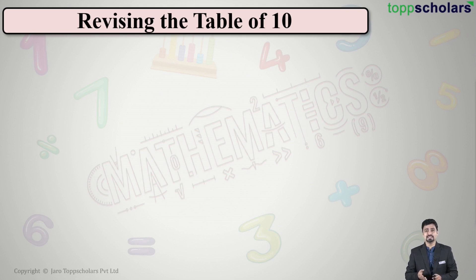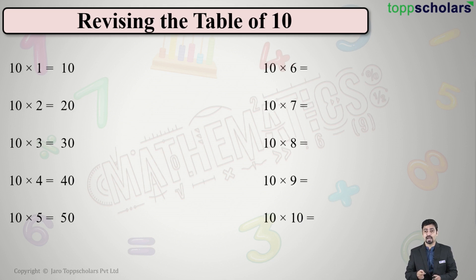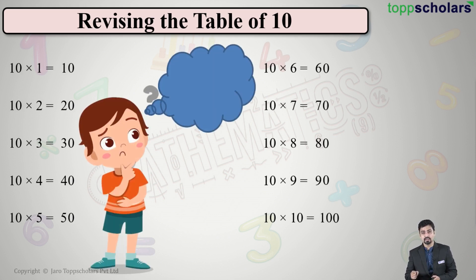of 10? Yes, it's so easy to remember. 10×1 = 10, 10×2 = 20, 10×3 = 30, 10×4 = 40, 10×5 = 50, 10×6 = 60, 10×7 = 70, 10×8 = 80, 10×9 = 90, and 10×10 = 100. Now, do we notice something interesting in this